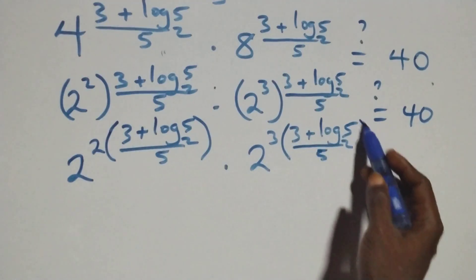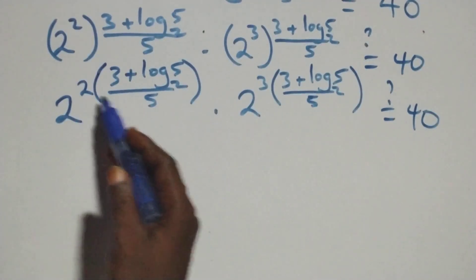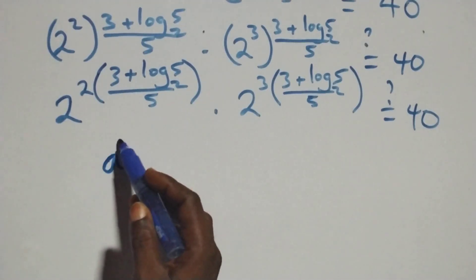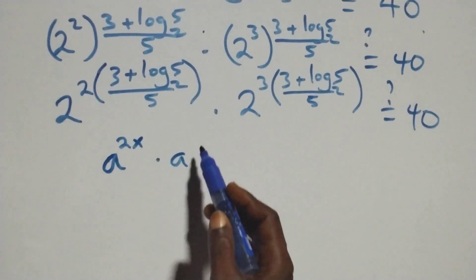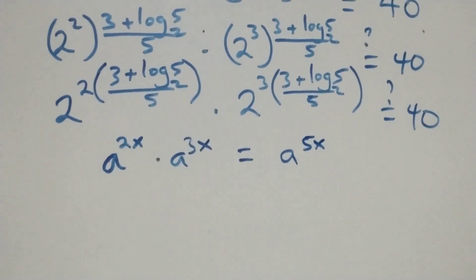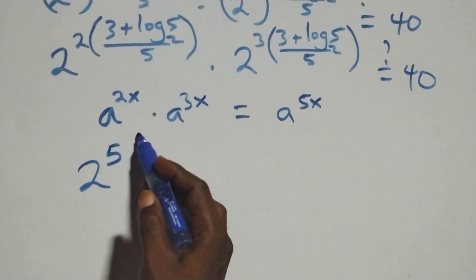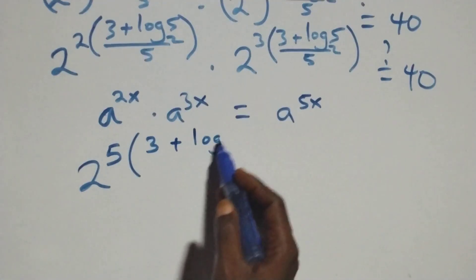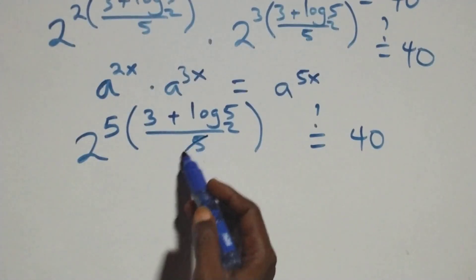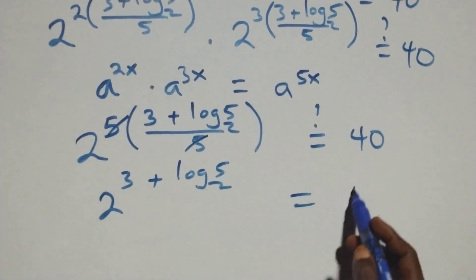This equals 40. We have the same base with different powers. We can combine them: a raised to power 2x times a raised to power 3x equals a raised to power 2x plus 3x, that's 5x, where x stands for (3 plus log₂5)/5. So this becomes 2 raised to power 5×(3 plus log₂5)/5, which equals 40 on this side.